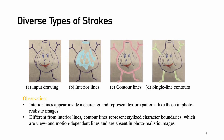Unlike photorealistic images with merely texture details, we observe that character drawings often exhibit diverse types of strokes, including interior lines and contour lines, as shown in this picture. Specifically, interior lines appear inside a character and represent texture patterns like those in photorealistic images. Contour lines, by contrast, represent stylized character boundaries, which are view- and motion-dependent and are absent in photorealistic images.